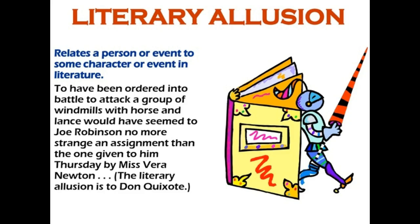Anytime you hear someone "tilting at windmills," it's a reference to Don Quixote by Cervantes, where the character was a man who thought he was a knight. He rode away on his donkey — which he thought was his noble steed, Rocinante — and it's written that he tilts at windmills because he thinks they are giants he's trying to fight. It's a ridiculous comparison, and that's an example of a literary allusion. This will actually come up if you ever read Travels with Charley by John Steinbeck.